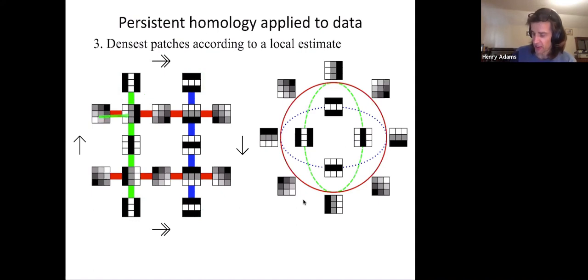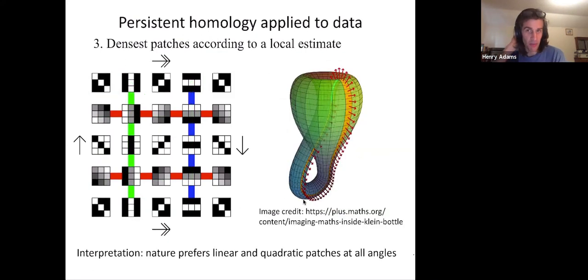So in red, we had linear gradients at all angles. And then in blue and green, we added in these quadratic patches in the vertical and horizontal directions. Where this Klein bottle is coming from is the next most common group of patches includes quadratic gradients at all angles, not just vertical or horizontal, but also these quadratic gradients at diagonal angles. And then once you include all these patches, we indeed get this Klein bottle.